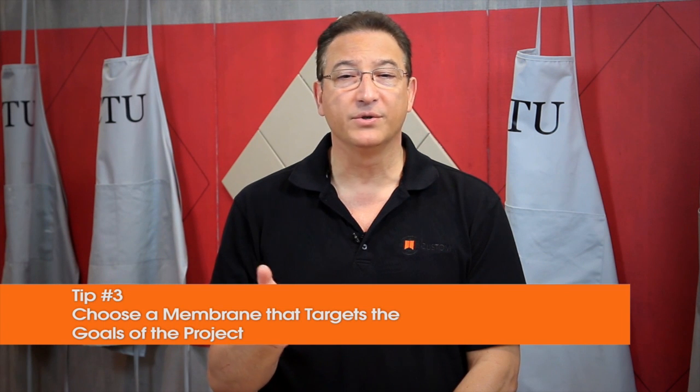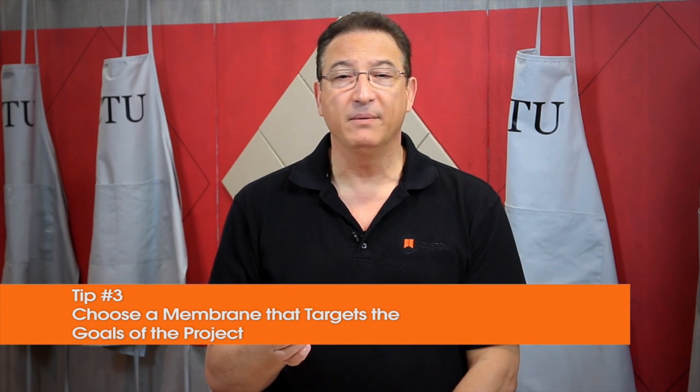Tip number three: choose a membrane that targets the sound attenuation goals of the project. A sound reduction membrane designed for use with tile can be a versatile solution on your project. Select one that meets the requirements of ANSI A118.13 and has an IIC rating that's been confirmed by independent testing. To qualify as one of these bonded sound reduction membranes, a reduction of at least 10 decibels has to be achieved by the addition of the product. Although the membrane may help to reduce airborne noise and improve your STC rating, this is not included in the ANSI standard.